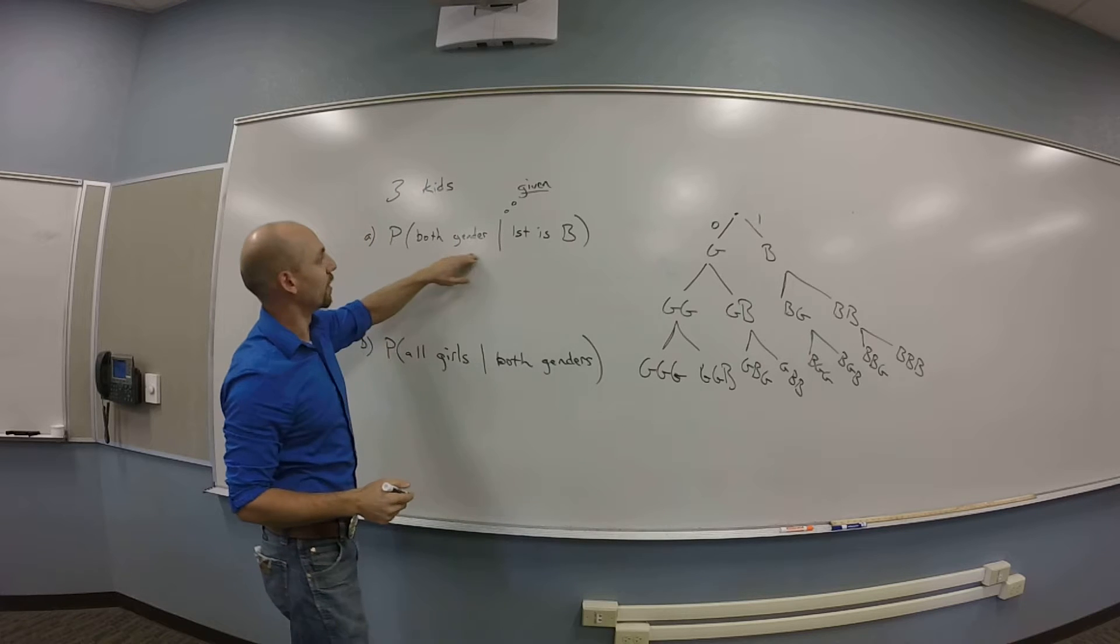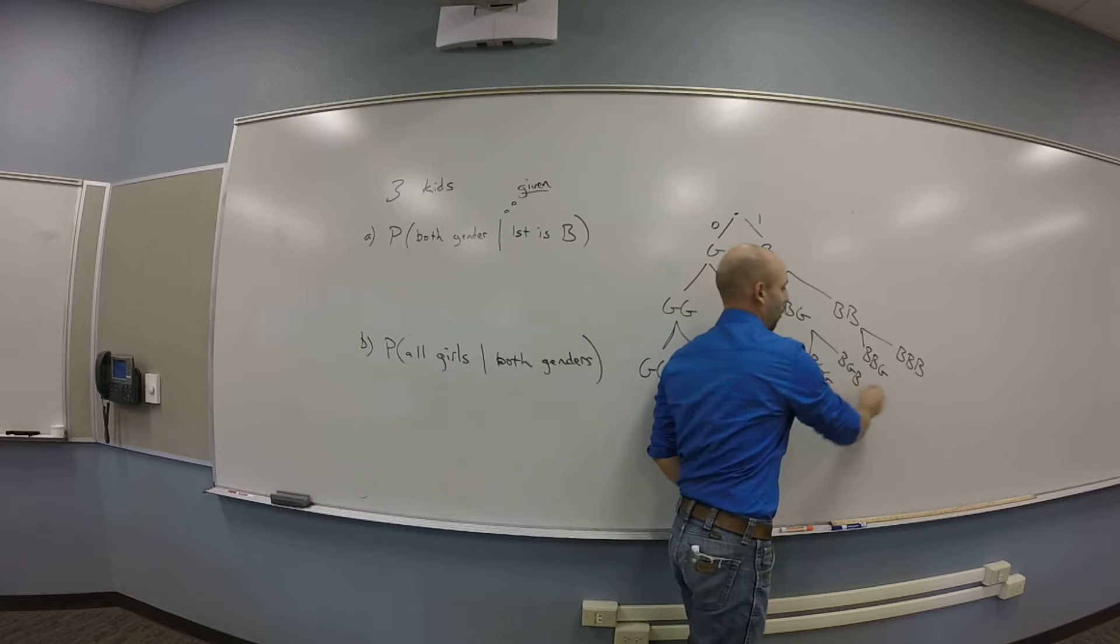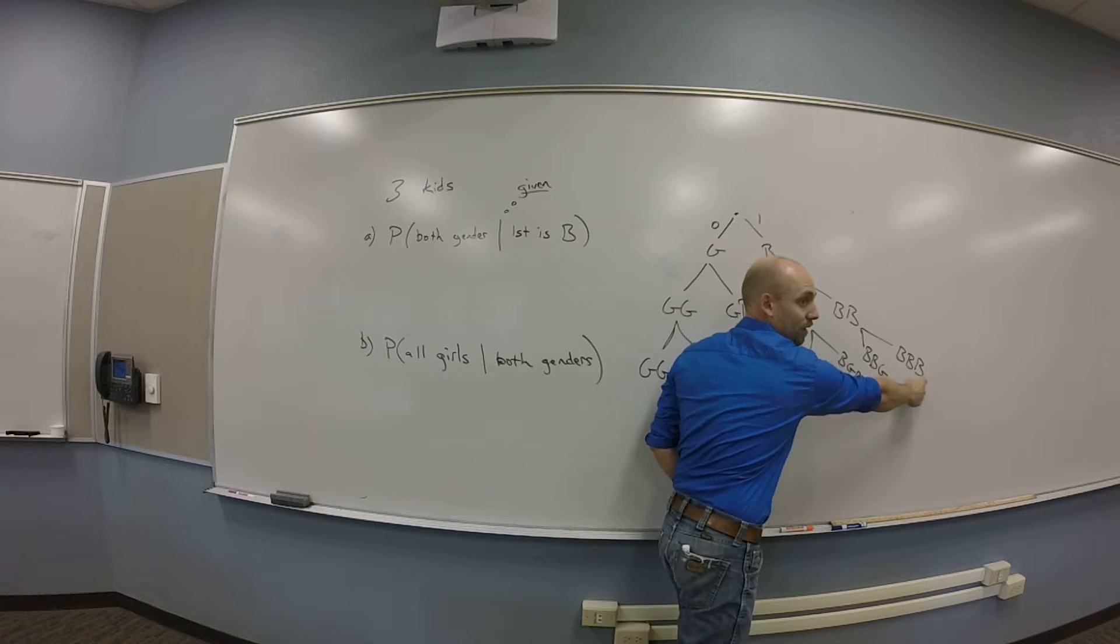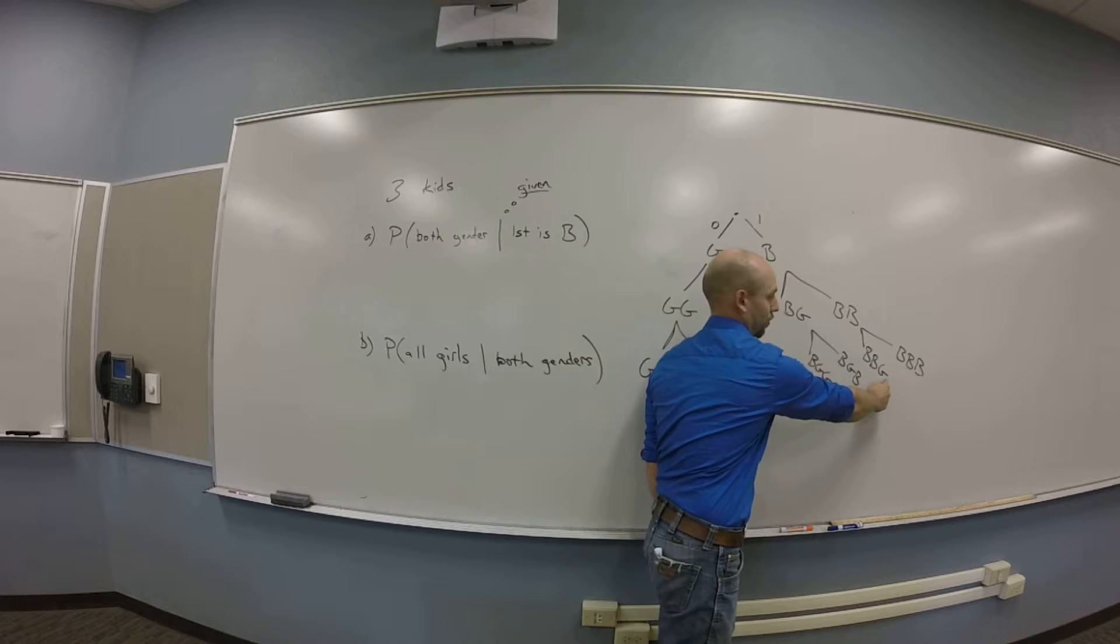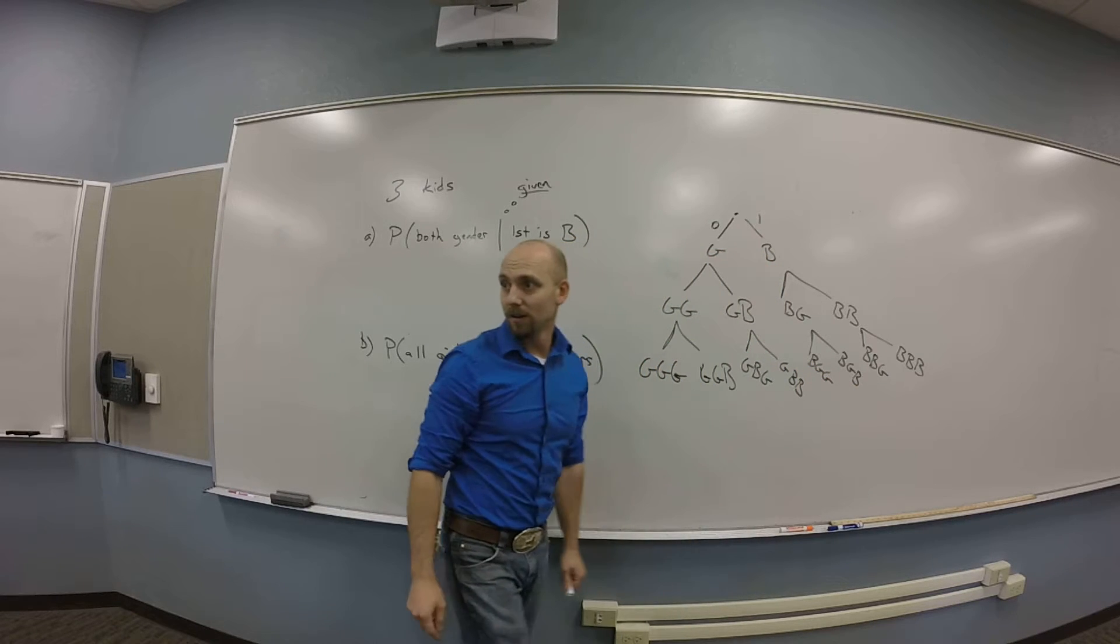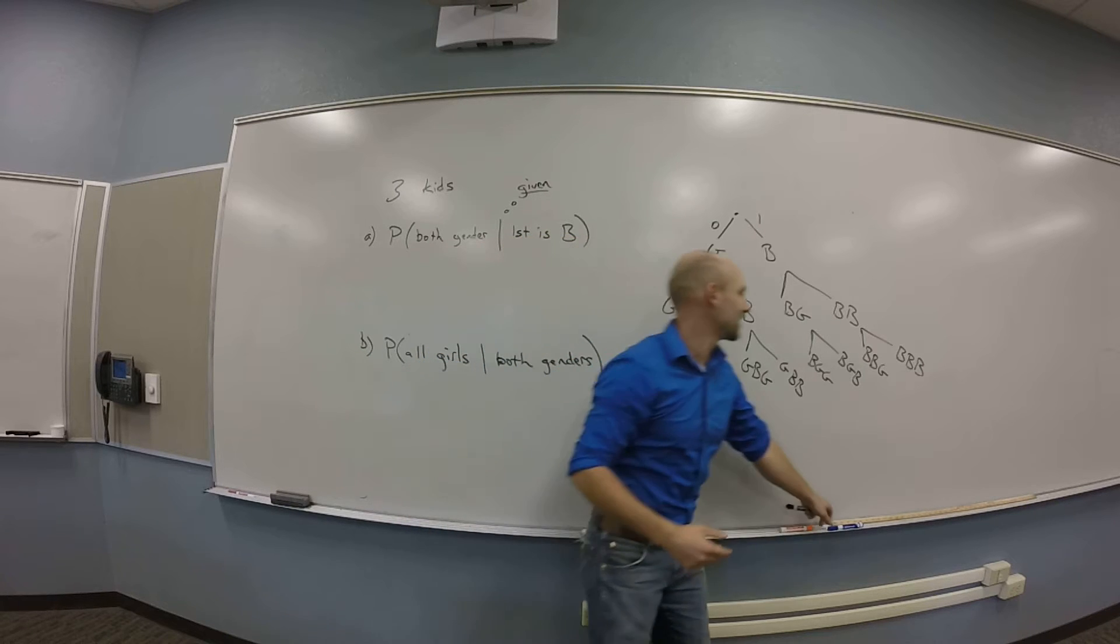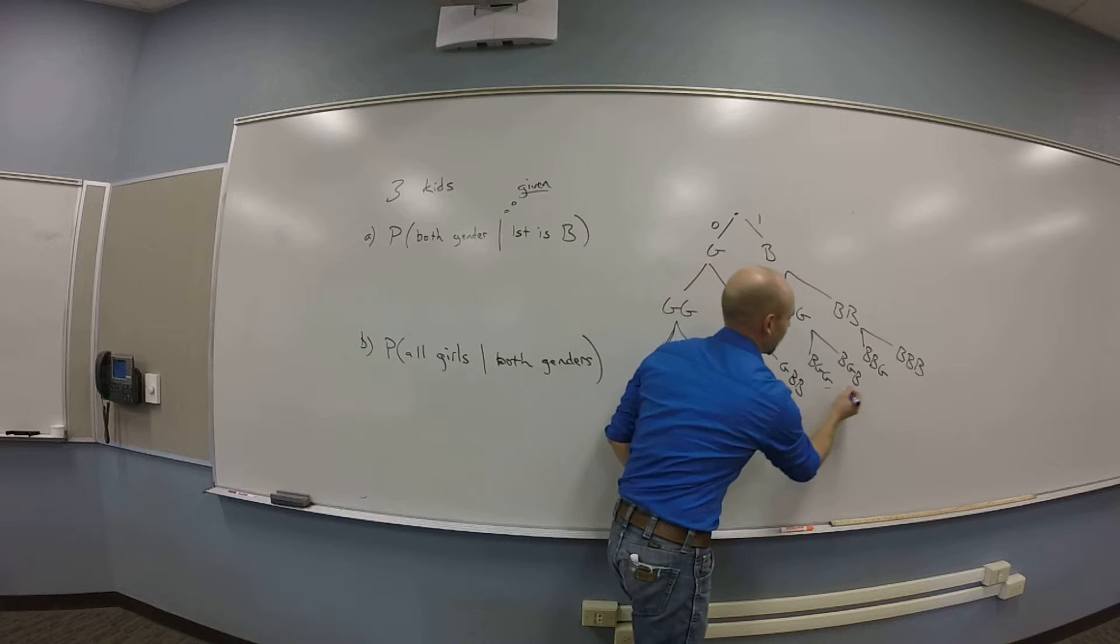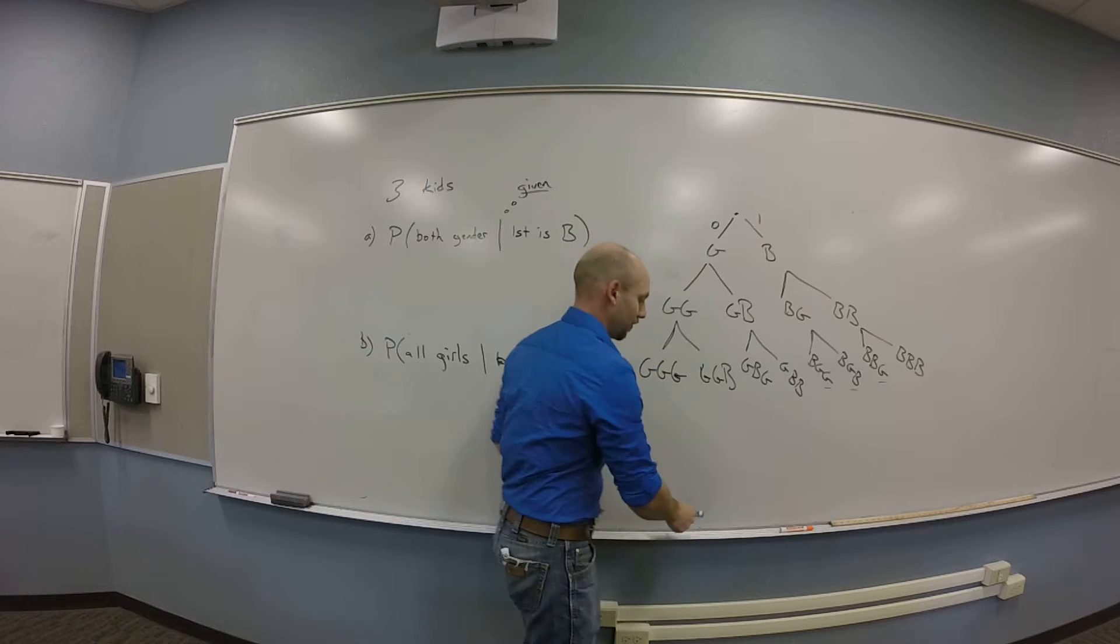So what's the probability of both genders given the first is a boy? Well, I have these four outcomes, right, and three of which include a girl. So my successes on that first one are these guys, and really that's three out of four options.